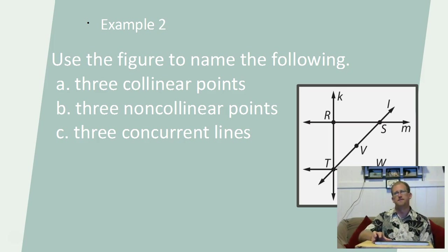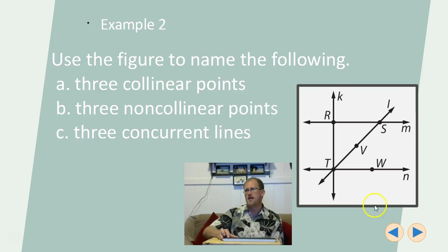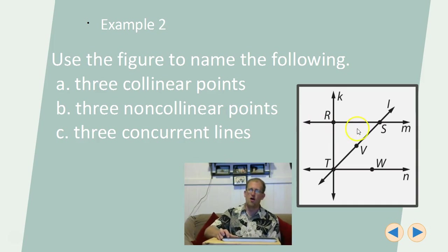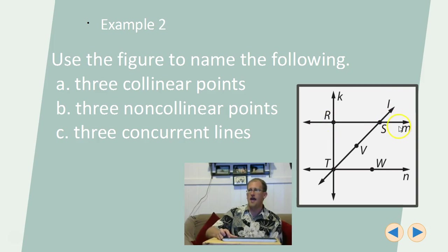Let's use this image to identify examples of these terms. For three collinear points: W, T, and B are not on the same line — not collinear. But T, B, and S are on the same line — they're collinear. For three non-collinear points: R, S, and V are not on the same line, so they are non-collinear. For concurrent lines: line N and line K intersect at point T; line M and line K intersect at point R; line I and line M intersect at point S. So we've found three sets of concurrent lines.